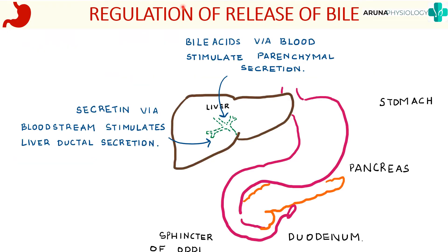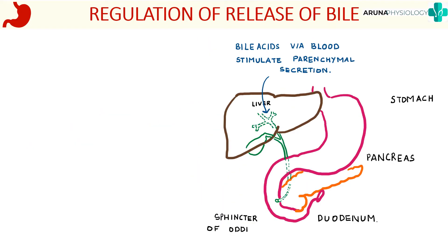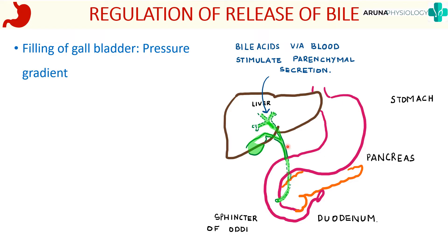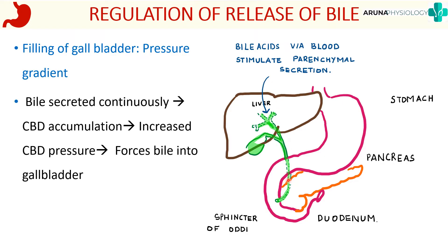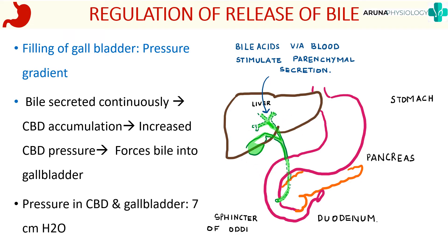Now we look at regulation of release of bile. The liver produces bile continuously; it moves through the hepatic ducts into the common bile duct, and excess bile is stored in the gallbladder. For filling of the gallbladder: bile secreted continuously accumulates in the common bile duct, increasing pressure there. Due to this increased pressure, bile starts going up the cystic duct and gets stored in the gallbladder. The pressure during filling is around 7 centimetres of water.